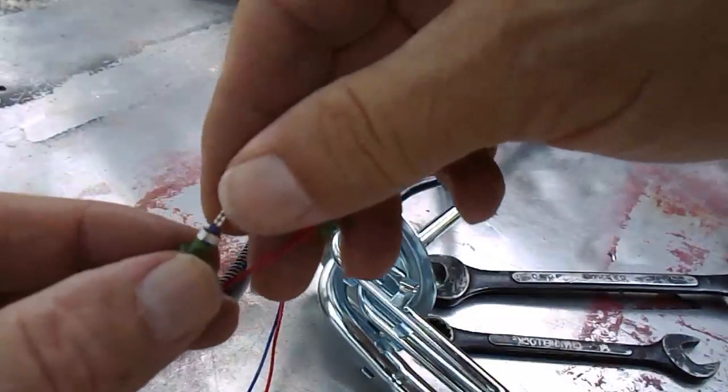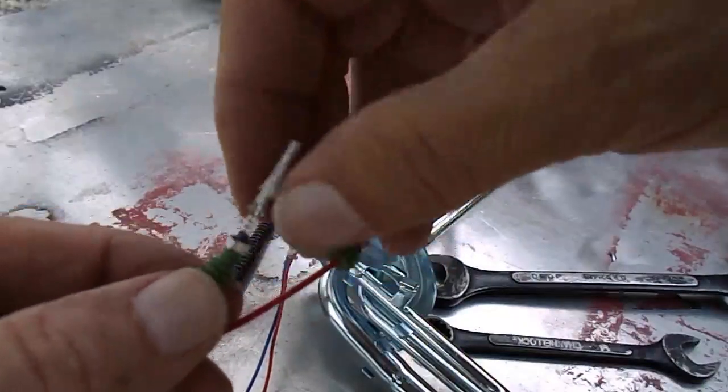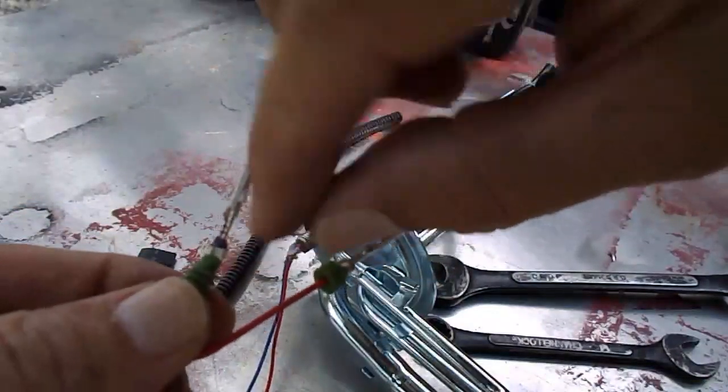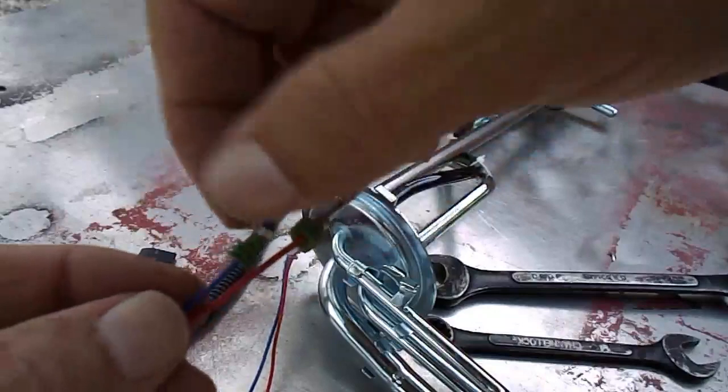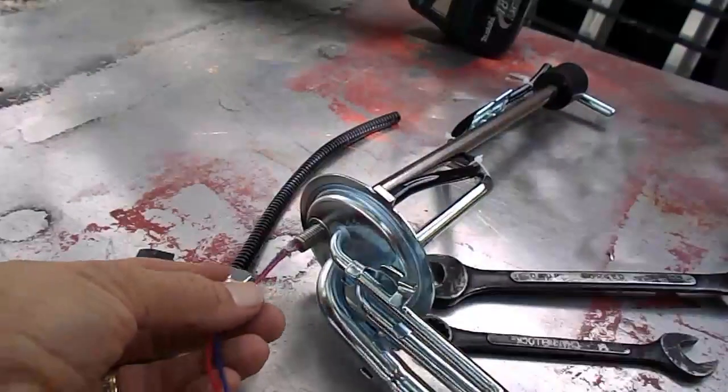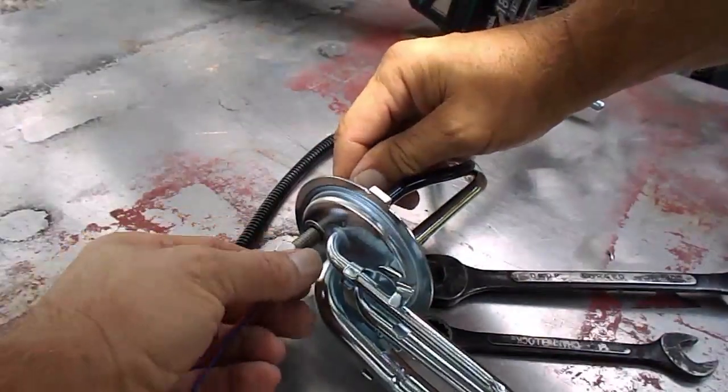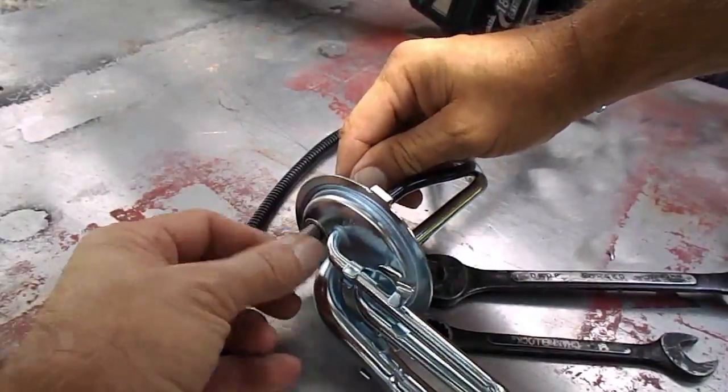If that does come off, you'll just have to repair it. You just bend these tabs back, put that cable seal back in and crimp them back down. So, the next thing, we're going to fish that nut all the way down, thread it onto the sending unit.